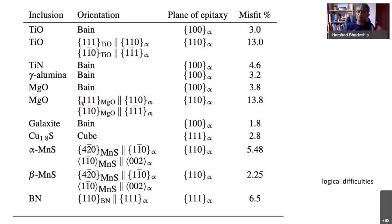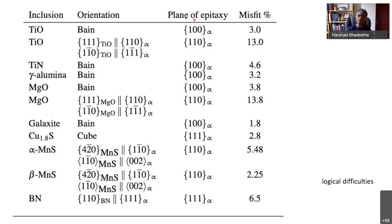There are some logical difficulties with an analysis like this. First, you have to assume a certain orientation relationship between the ferrite and the inclusion. Many of these inclusions actually form in the liquid, so there is no reason why they should have a particular orientation with the austenite and therefore a particular orientation relationship with the ferrite. Second, you have to assume that certain planes of the inclusion and the ferrite will be in contact, and that is not necessarily going to happen.